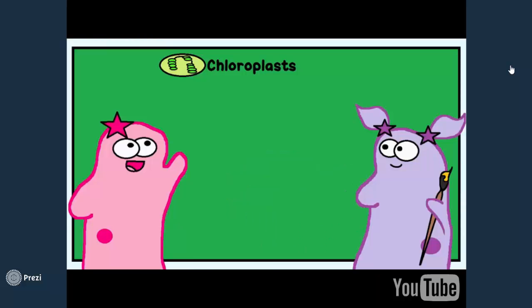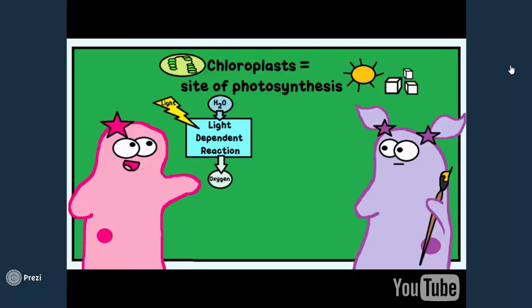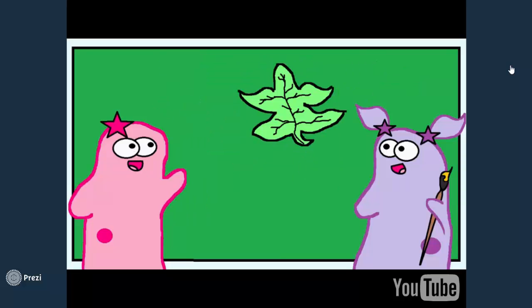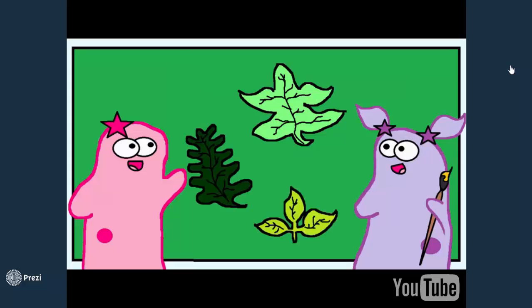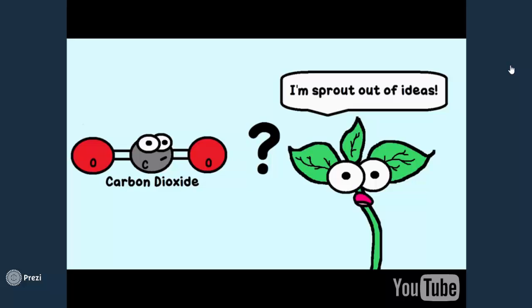Photosynthesis is a complicated process made up of a light-dependent reaction and a light-independent reaction, also called the Calvin cycle. It's a big enough process that we'll need another video clip to cover it. But the leaf structure is designed to capture light energy with its chloroplasts. The other reactant on our photosynthesis checklist is carbon dioxide — so how does the structure of plants help them obtain CO2?